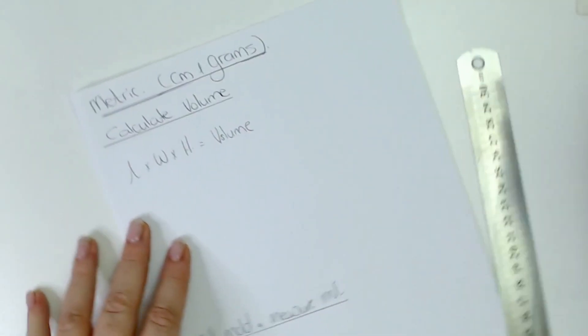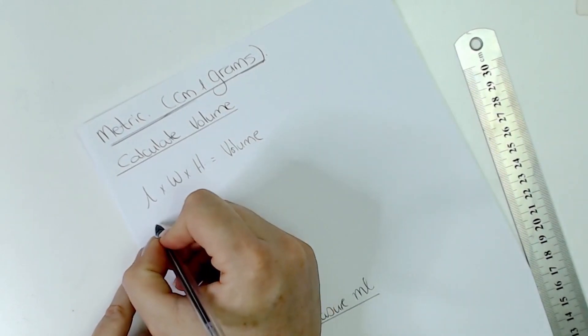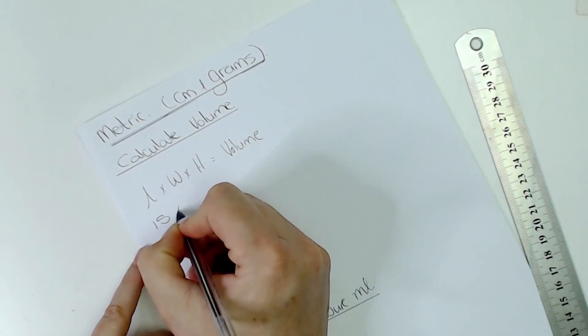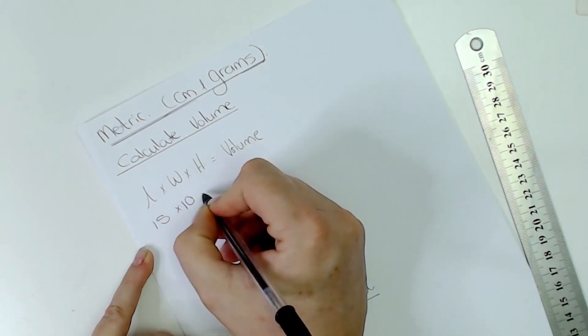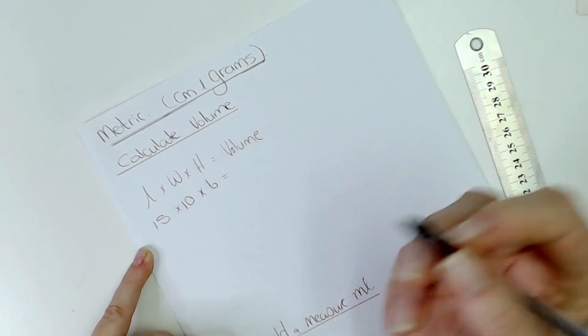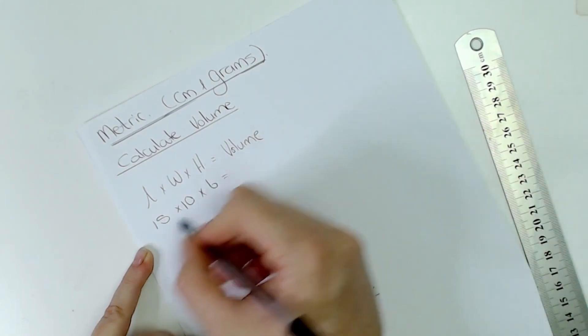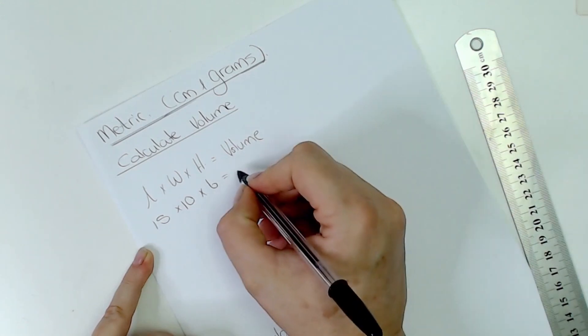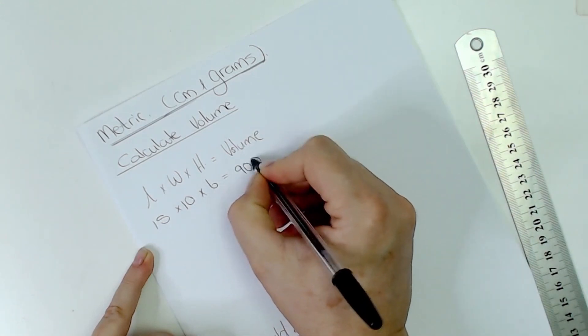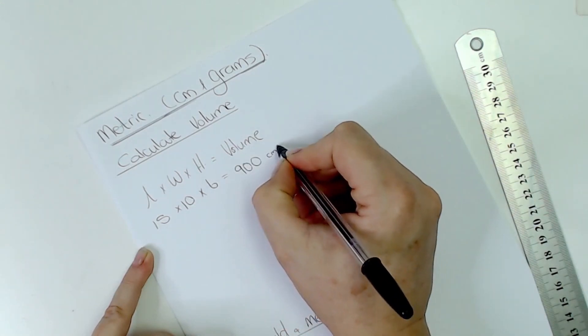So what we're going to do here is we're going to take the length that was 15 centimeters times the width that was 10 times the height that we decided on, six. So that will give me my volume. So 15 times 10 times 6 is going to give me 900 cubic centimeters.